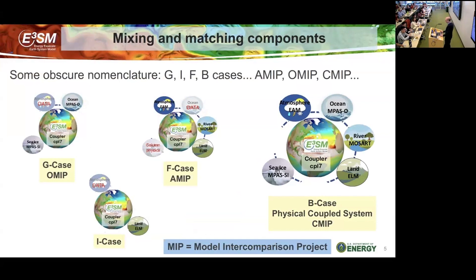We can do various mixtures and mix-and-match of the components — this is where we have some nomenclature: G, I, F, B cases, and also AMIP, OMIP, CMIP. In G cases, we have an active ocean and active sea ice, with a data atmosphere being read from offline, all talking through the coupler. F cases have an active atmosphere, active river runoff, and active land, with a prescribed ocean SST and sea ice extent, but with column physics in the sea ice. We also have I cases focused mostly on the land, driving the land model offline. And then we have the fully coupled physical system with atmosphere, active ocean, river runoff, land, and sea ice — that's what the coupled group is responsible for. The MIPs roughly correspond: G case to OMIP, F case to AMIP, and B case to CMIP.